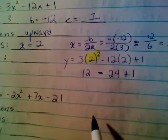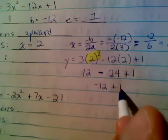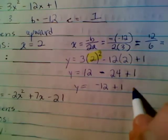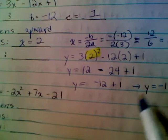12 minus 24 is negative 12 plus 1. So I'm getting y equals negative 11. So our vertex is 2, negative 11.